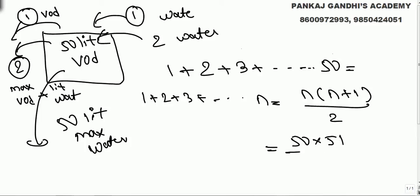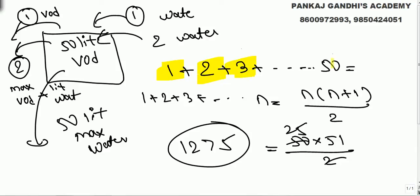So in the whole process what all he drinks is first day he drinks 1, second day he drinks 2, third day he drinks 3, last day he drinks 50. So total he drank 50 into 51 upon 2, 1275. It's a pure puzzle.